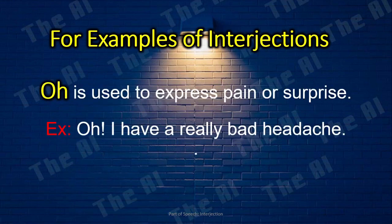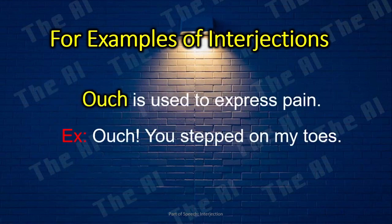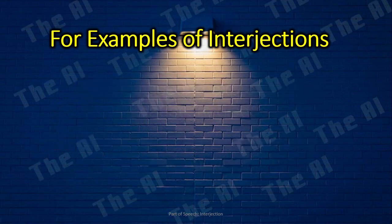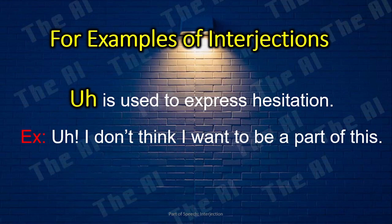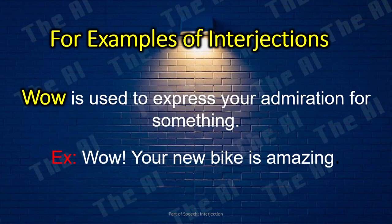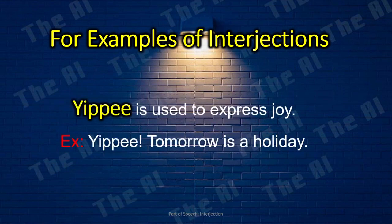Oh — used to express pain or surprise. Example: Oh! I have a really bad headache. Ouch — used to express pain. Example: Ouch! You stepped on my toes. Phew — used to express relief, exhaustion, or disgust. Example: Phew! That was an extremely long presentation. Uh — used to express hesitation. Example: Uh, I don't think I want to be a part of this. Well — used to introduce a remark. Example: Well, what you just did was wonderful. Wow — used to express admiration. Example: Wow! Your new bike is amazing. Yippee — used to express joy. Example: Yippee! Tomorrow is a holiday.